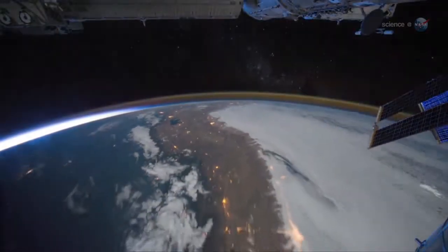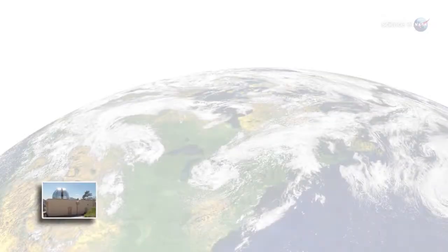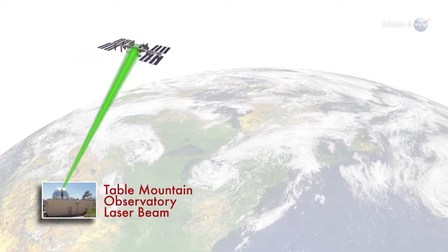Because the space station whips around the Earth at 17,500 miles per hour, laser-tagging a telescope on the fast-moving ground below can be tricky. To accomplish the precision tag-up, a laser at the ground station illuminated the space station.